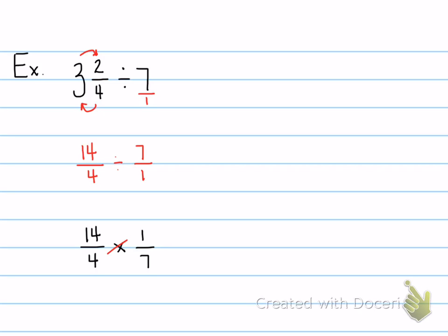I'm going to simplify 1 and 4. Can't simplify. 14 and 7, I see 7 goes into 7 one time. 7 goes into 14 two times.